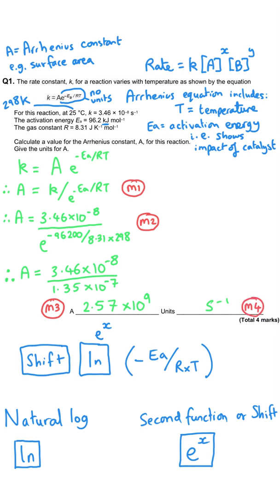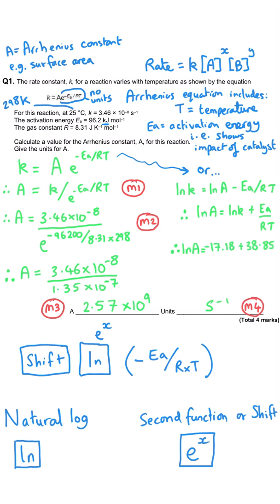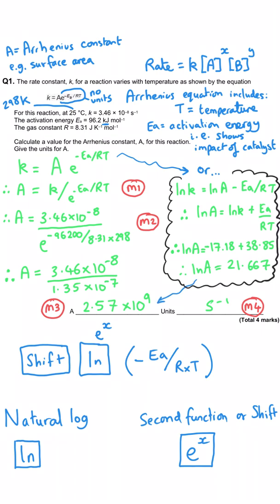If you're more confident with the maths, you can take natural logs of both sides, giving LN(K) = LN(A) − Ea/RT, then rearrange to make LN(A) the subject. Crunching those numbers gives LN(A) = −17.179 + 38.847 = 21.667, and the inverse gives A = 2.57 times 10 to the 9, still seconds to the minus one. It doesn't matter which method you use — it's just personal preference.